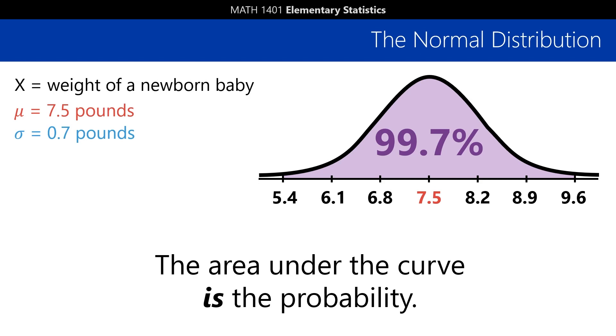So, for example, the area under the entire bell curve is always 100%, or 1. That's the same basic idea as all the probabilities in a discrete distribution adding up to 1.